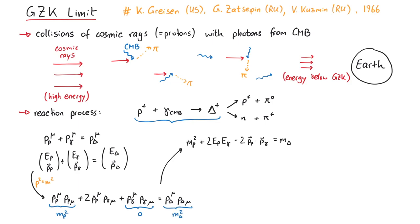Next, for the inner product of proton momentum and photon momentum, we can use the magnitude of the momentum vectors and the cosine of the scattering angle. For photons, this is exactly equal to their energy. And for ultra-relativistic protons, we can approximate their momentum with their energy as well. This means we can rearrange this equation to yield the proton energy.